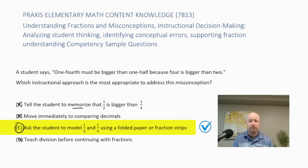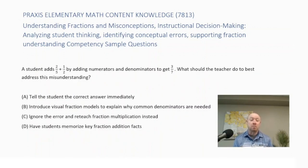A student adds two-fifths plus one-half by adding numerators and denominators to get three-sevenths. What should the teacher do to best address this misunderstanding? Is it A, tell the student the correct answer immediately? B, introduce visual fraction models to explain why common denominators are needed? Is it C, ignore the error and reteach fraction multiplication instead? Is it D, have students memorize key fraction addition facts?